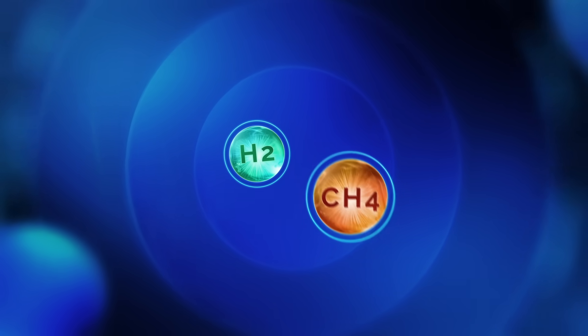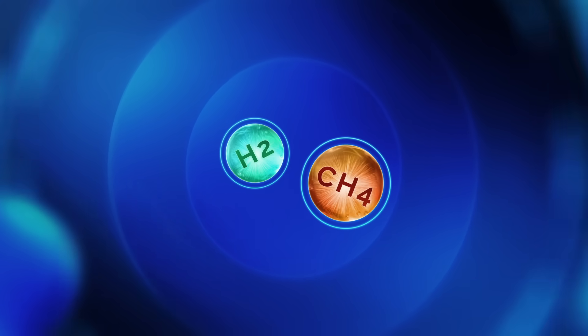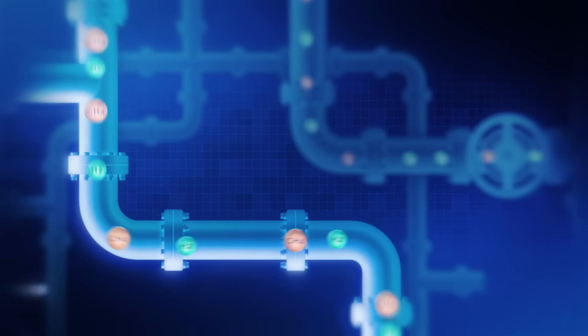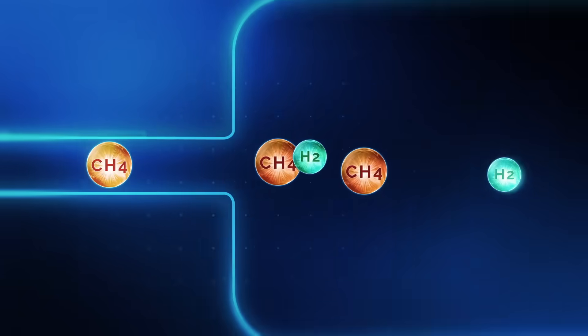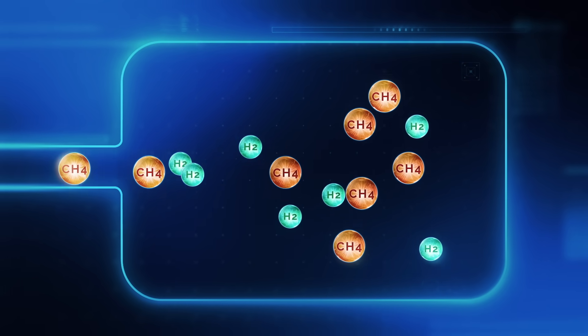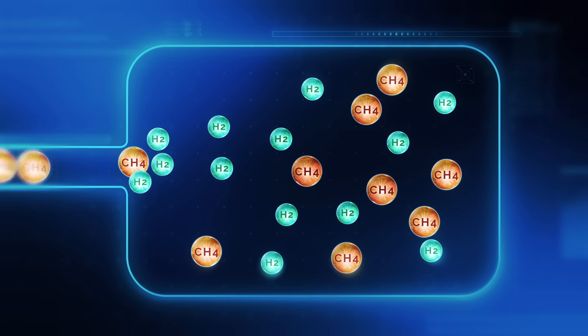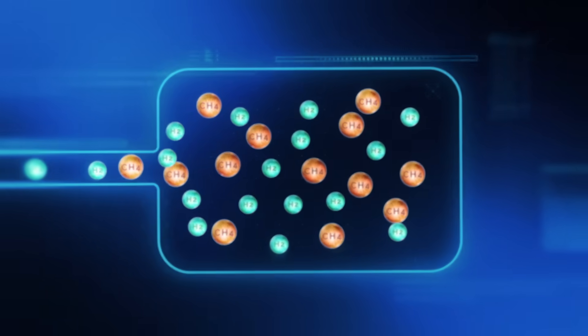One answer is to blend hydrogen with natural gas before sending it on its way through the well-developed global network of existing natural gas pipelines. Problems arise when the blended gas arrives at its destination, as the hydrogen must be filtered out to be used in its purer form.